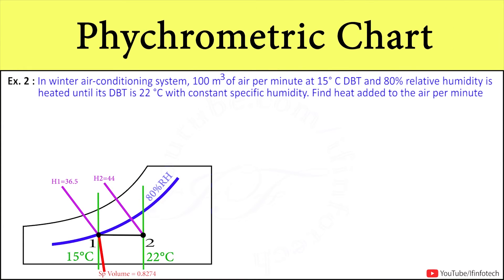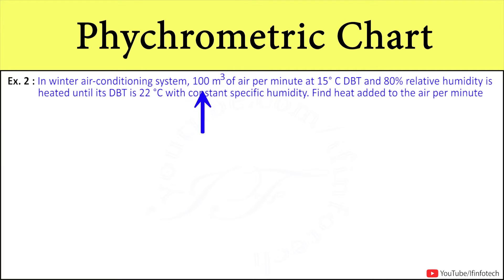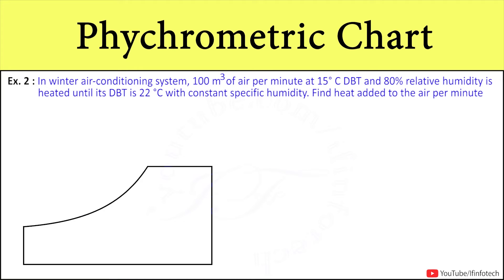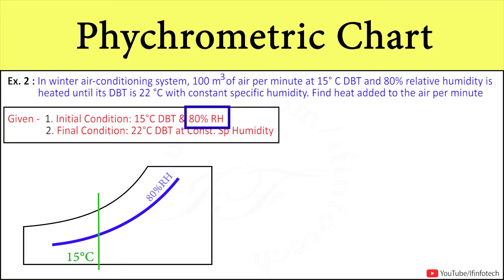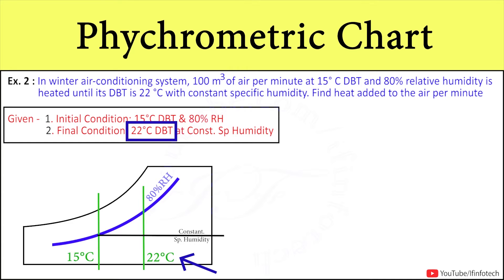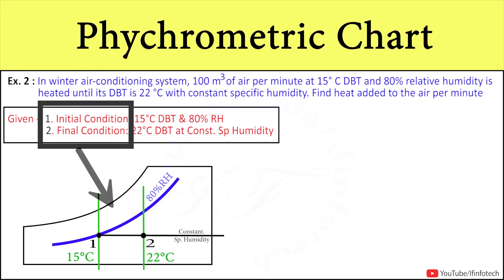The next numerical: in a winter air conditioning system, 100 m³ of air per minute at 15°C dry bulb temperature and 80% relative humidity is heated until its dry bulb temperature is 22°C with constant specific humidity. Find heat added to the air per minute. The given data — initial condition: 15°C DBT, 80% RH, volume 100 m³/min; final condition: 22°C DBT. We first mark initial and final conditions on the psychrometry chart.